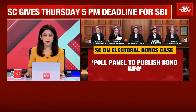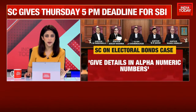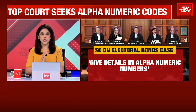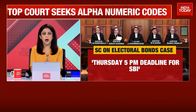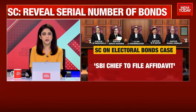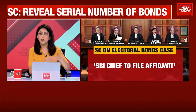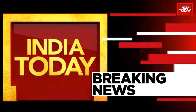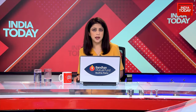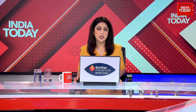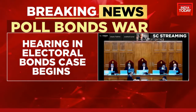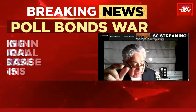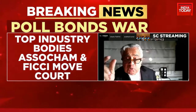Prashant Bhushan's plea is before the court in the electoral bonds matter. The court has said it is looking at alphanumeric codes and that SBI should start providing this information from April 12, 2019 onwards. FICCI and ASSOCHAM have moved the Supreme Court against the release of electoral bond unique identification numbers, opposing making the donors list public.